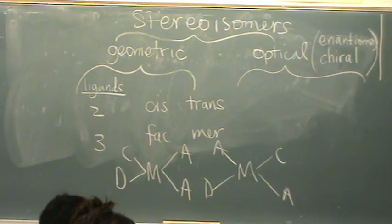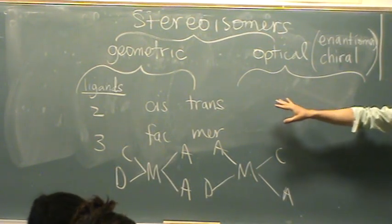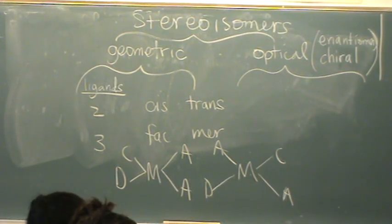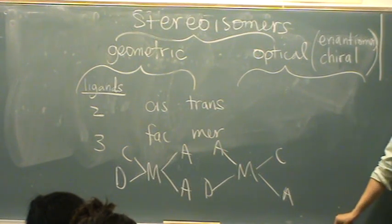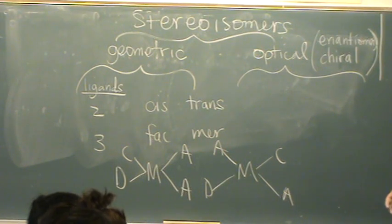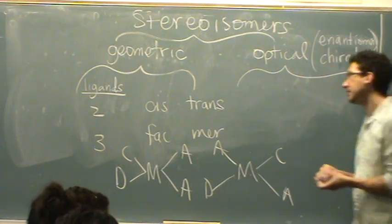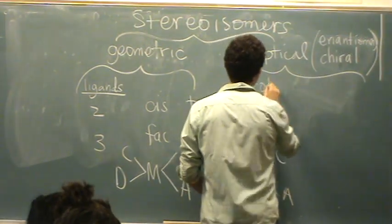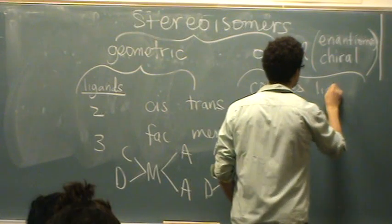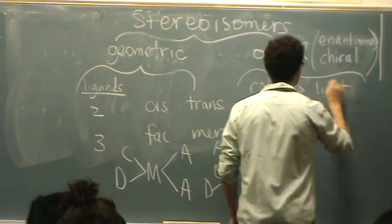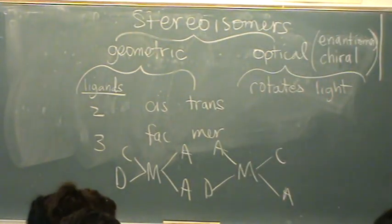Alright, so the unique thing about the optical isomer is that, again, it's bonded to the same things, but there's not necessarily different physical properties. The main thing that you'll see everybody listed is how it rotates light.